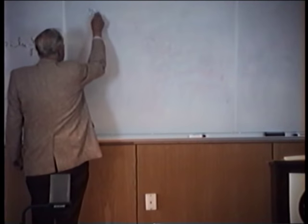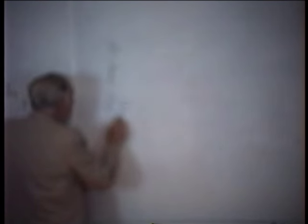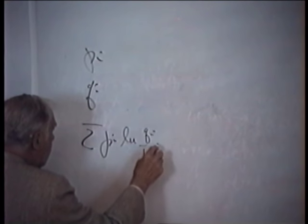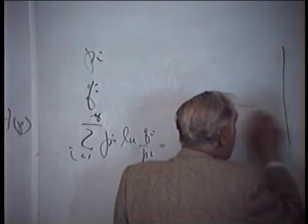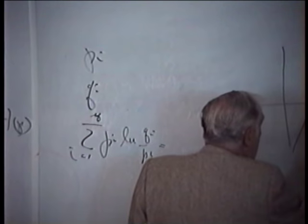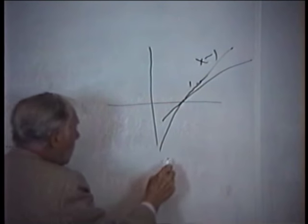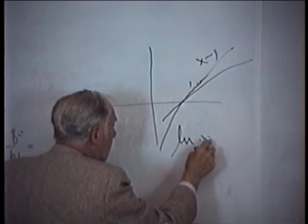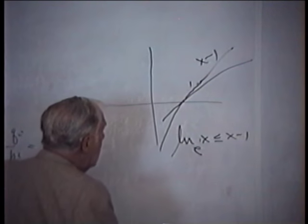Now, the first thing I need to do is get Gibbs' inequality. Given a distribution P_i and another distribution Q_i — two different probability distributions — I'm going to look at the summation of P_i · log(Q_i / P_i). I'm going to use the inequality that the natural log function has slope 1 at x=1, and the line is x−1. So I assert that ln(x) ≤ x−1, with equality at x = 1.